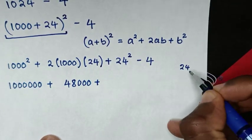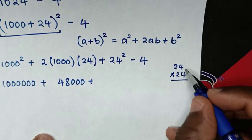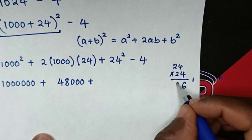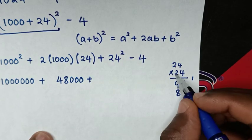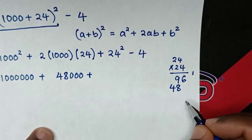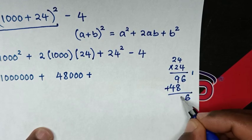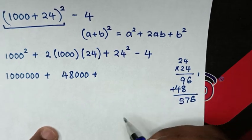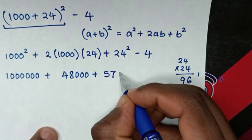We multiply 24 times 24. It will be 4 times 4 is 16, carry the 1. 4 times 2 is 8 plus 1 is 9. 2 times 4 is 8. 2 times 2 is 4. So the sum is 576. So 24^2 is 576.